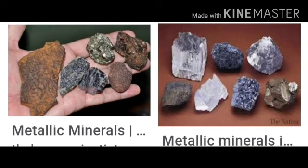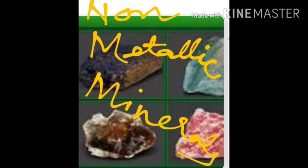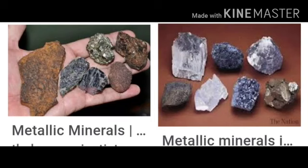Metallic minerals contain metals. Metals are hard substances that let heat and electricity pass through them. They have a typical luster or shine, and they can be beaten into various shapes and drawn into wires. A mineral from which we get a metal is called an ore. Metallic minerals are classified into two types: ferrous minerals and non-ferrous minerals.